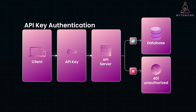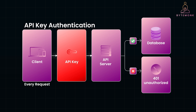With API key authentication, the client sends a unique key that acts as their identifier when making API requests. This key is issued by the API provider to the client, enabling them to monitor usage and control access. While simple to implement, API keys offer limited control over who can use the API — they function similarly to a password. If an API key is compromised, it's challenging to restrict or revoke access for specific users. The key must accompany every request, either as part of the query string, in the request header, or within a cookie. To safeguard the key from interception, it's crucial to use HTTPS to ensure secure transmission.